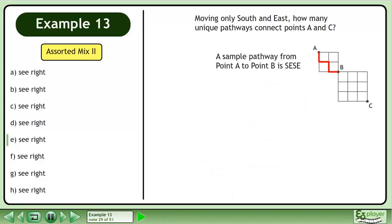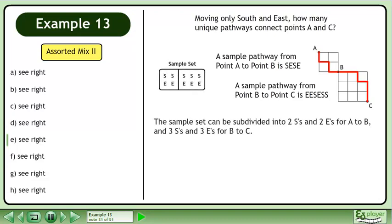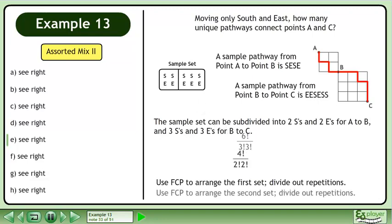A sample pathway from point A to point B is south-east-south-east. A sample pathway from point B to point C is east-east-south, east-south-south. The sample set can be subdivided into two S's and two E's for A to B, and three S's and three E's for B to C. Use the fundamental counting principle to arrange the first set and divide out repetitions. Multiply to get the answer, 120.